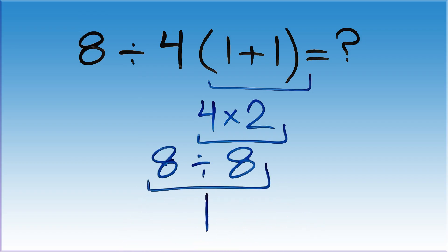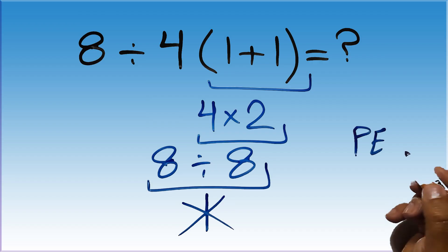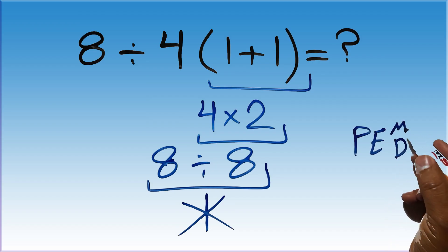But this answer is not correct because according to the order of operations first we have to do parentheses, then exponent, then multiplication and division, excuse me, multiplication or division, and finally addition or subtraction.